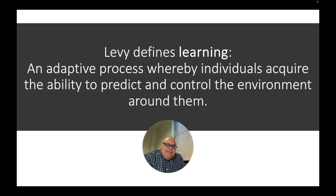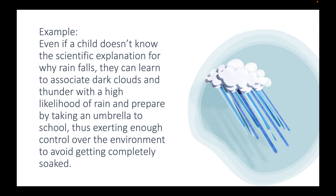An example is a child walking around in the rain. Even if that child doesn't understand the scientific explanation of why it rains, they can learn to associate dark clouds, thunder, with a high likelihood of rain. And they prepare for that possibility. They're trying to take some control about what happens to them in the world by taking an umbrella with them to school. So you obviously can't necessarily stop the rain, but you can take steps to minimize the chances of yourself getting wet by taking an umbrella with you if you go out and it looks like it might rain.